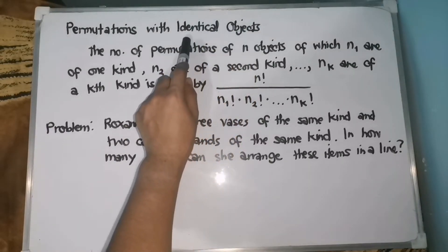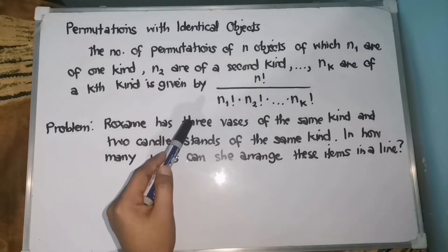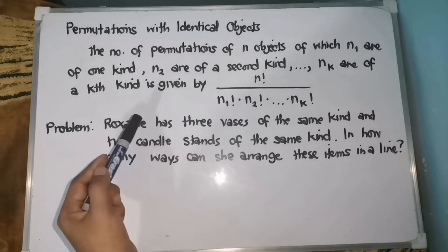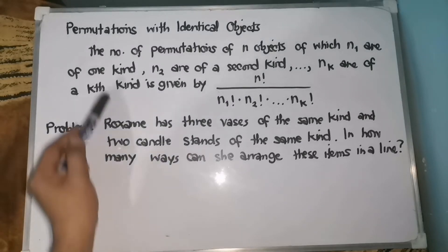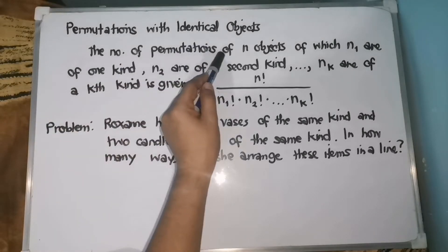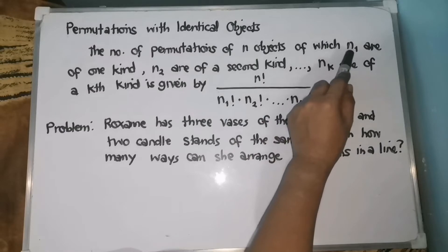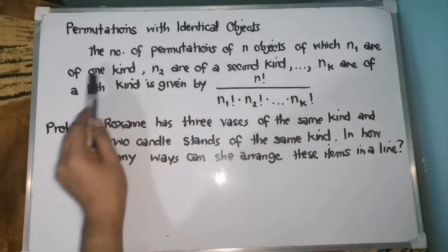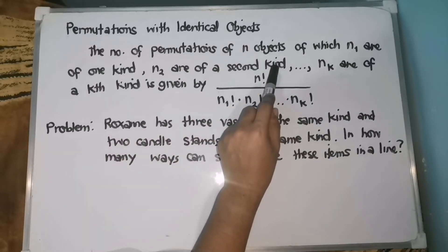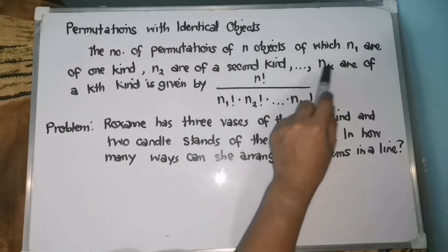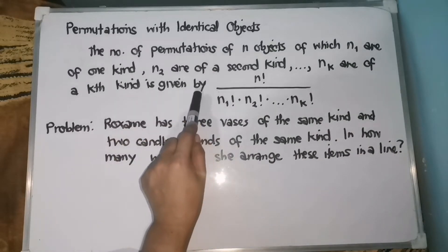When we say identical, that is, in Tagalog, magkatulad or magkamukha or magkaparehas. Therefore, our mathematical concept is: the number of permutations of n objects — again, we're talking about n objects — of which n sub 1 are of one kind, and n sub 2 are of a second kind, ellipses, n sub k are of a kth kind, is given by: